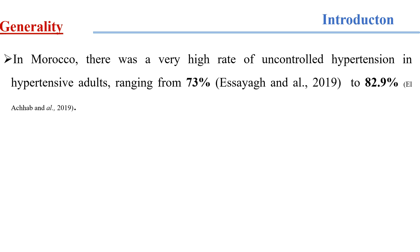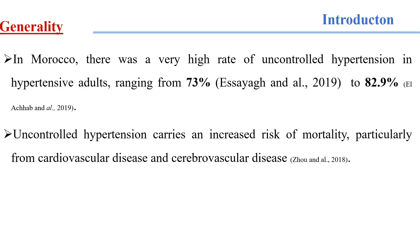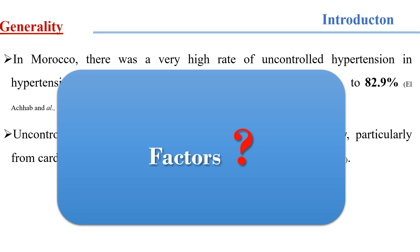In Morocco, there is a very high rate of uncontrolled hypertension in hypertensive adults, ranging from 73 percent to 82.9 percent. Uncontrolled hypertension increases the risk of mortality, particularly from cardiovascular disease and cerebrovascular disease. This risk factor is a complex public health problem that depends on several factors.